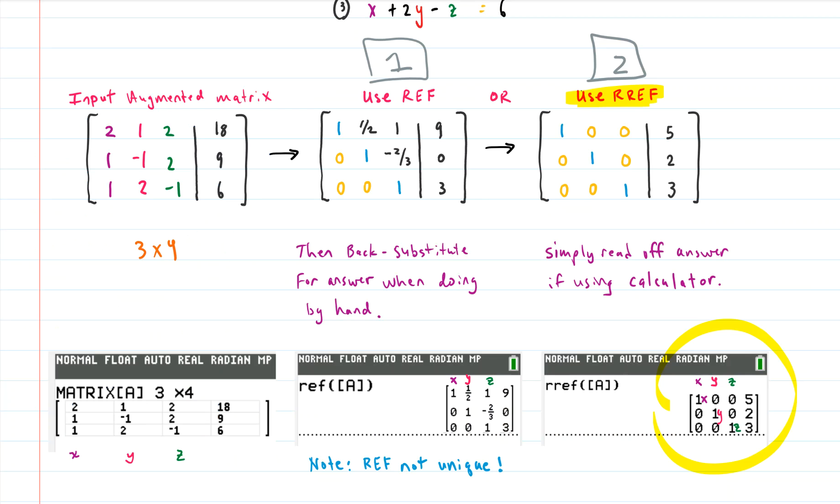Those are two ways that you can solve a system of linear equations using your calculator. You can first put in the matrix and then you can use the REF function, the row echelon form function, and back substitute, which isn't hard, it's faster than doing it by hand. Or since you're using a calculator, you can just go all the way with the RREF function and it literally just spits out the answer and you just read it off the output like we just did here. Hopefully this was helpful. Thanks for watching and have a good day.